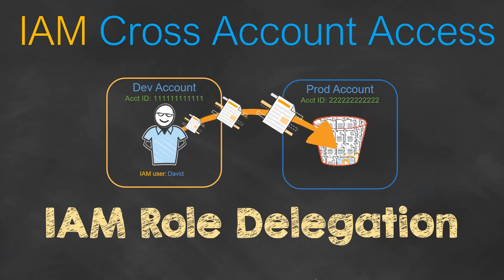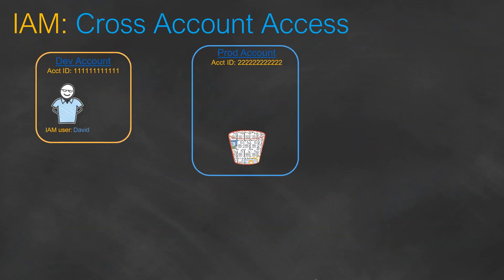Let's go ahead and see them. Say for example you have a dev account and David is the IAM user in that dev account where he can perform a lot of operations. Then you have a prod account where there is an S3 bucket which David needs to get access to.